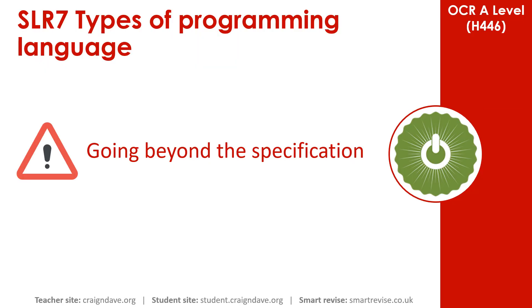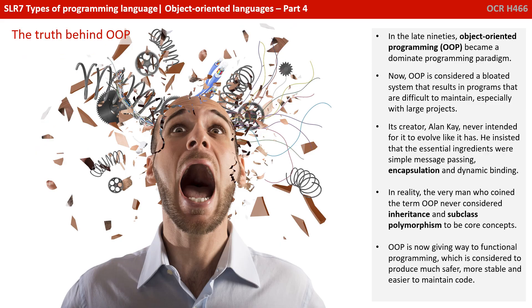That's it for what's in the specification, but there's one final thing to point out which may be of interest. Having spent four videos talking about the benefits and wonders of object-oriented programming, here's a little bit of truth. In the late 90s, OOP became a very dominant and popular programming paradigm, and lots of money was invested in it by major companies including Microsoft. Nowadays, however, it doesn't take much searching on the internet to discover that OOP is considered quite a bloated system that can result in programs that are difficult to maintain, especially with larger projects. Its original creator, Alan Kay, never intended for it to evolve like it has today.